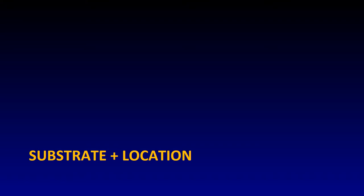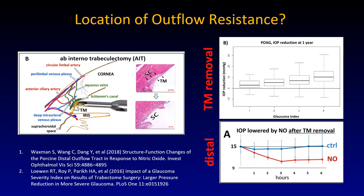Substrate and location: where is the outflow resistance? This is actually a puzzling question. The trabecular meshwork used to be thought of as the primary outflow resistance. But curiously, when it is removed in surgery, the pressure does not typically drop to the level of episcleral venous pressure of around 8 mmHg — which is what you would predict, since the anterior chamber is connected through vessels to the episcleral venous system. So where is the missing resistance?